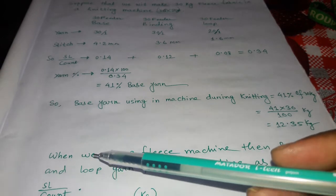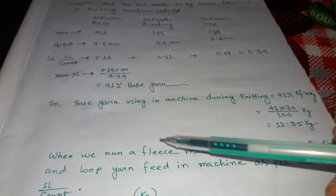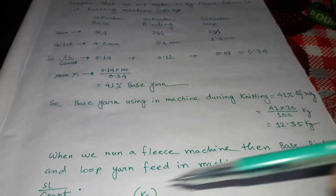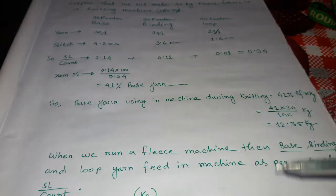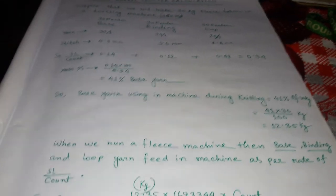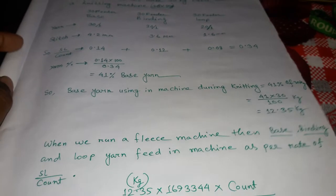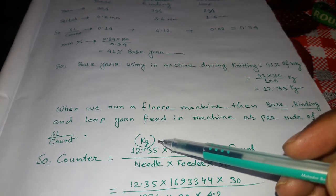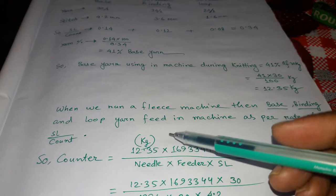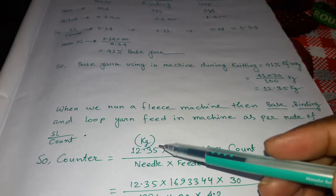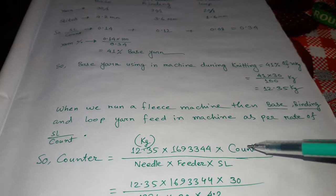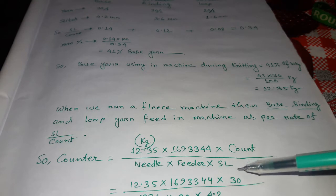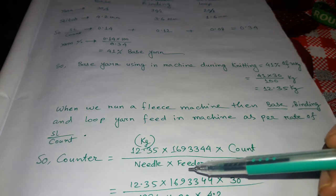When we run a piece machine, base, binding, and loop yarn feed into the machine as per the rate of stitch length divided by count. At a time, all yarns are used together in the machine — base, binding, and loop. So the counter formula will be: KG × 169334 × count ÷ needle ÷ feeder ÷ stitch length in mm.